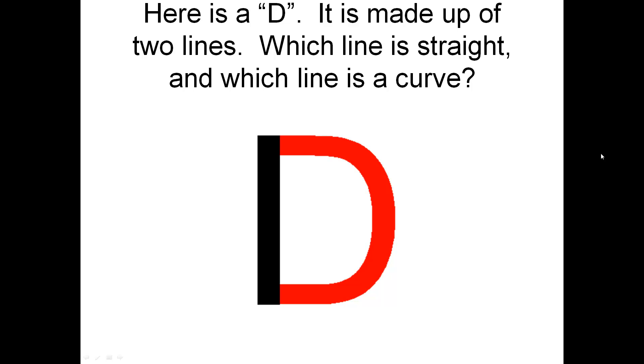Here is a D. It is made up of two lines. Which line is straight and which line is a curve? So the black line is straight and the red line is a curve.